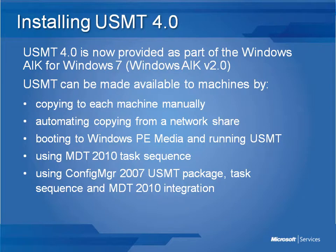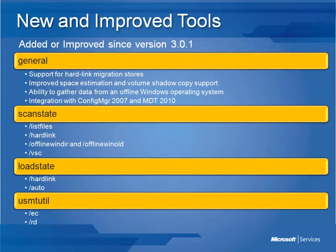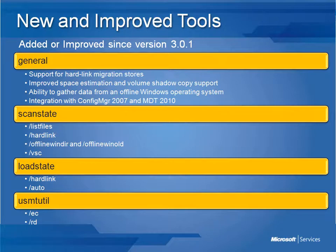Let's take a look at some of the new features and command line changes in User State Migration Toolkit 4.0. Many of the new features are designed to speed up how USMT works. These include support for new hardlink migration stores, used in computer refresh scenarios only. Hardlink migration stores are stored locally on the computer being refreshed and can migrate user accounts, files, and settings in less time and using less disk space than traditional methods.